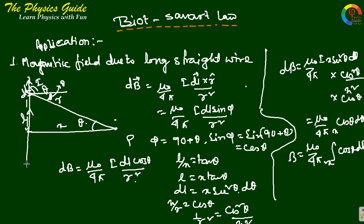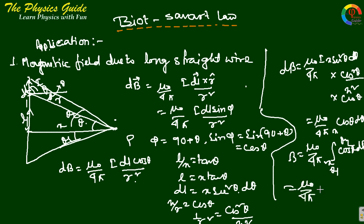For a finite wire, the limits go from angle θ₁ to θ₂, where θ₁ is the angle at the lower end and θ₂ is the angle at the upper end of the wire. After integration, we get B equals mu₀ by 4πx times (sinθ₂ minus sinθ₁).